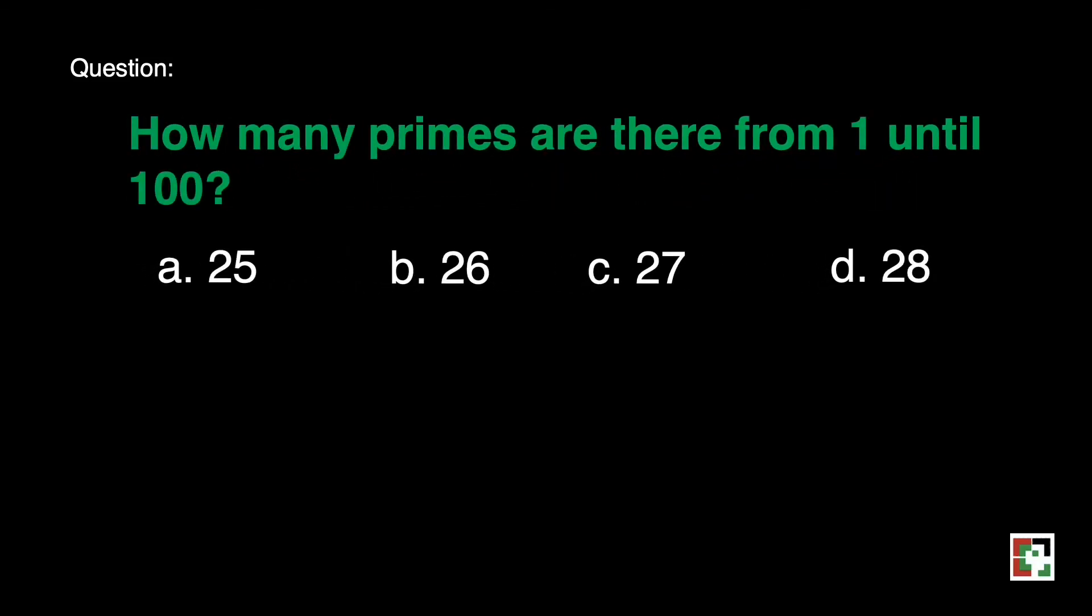Next question. How many primes are there from 1 until 100? a) 25, b) 26, c) 27, and d) 28.